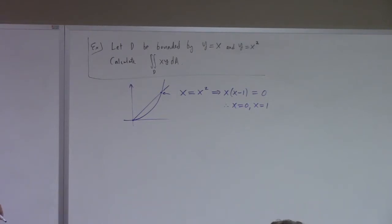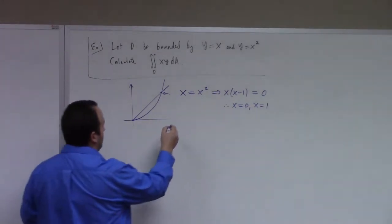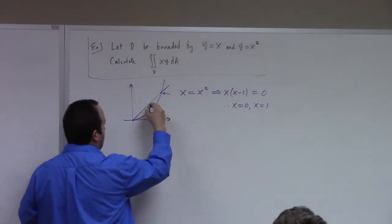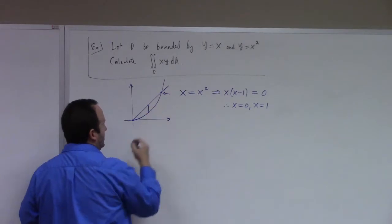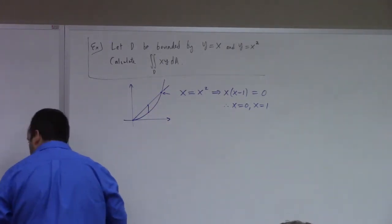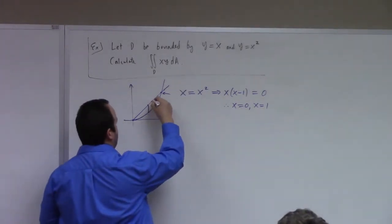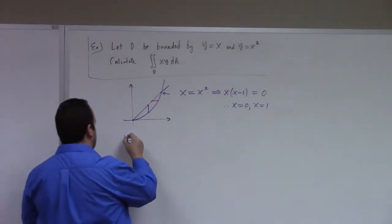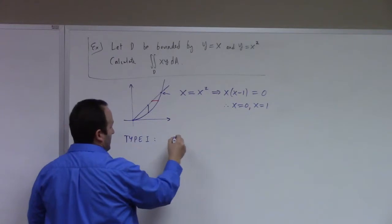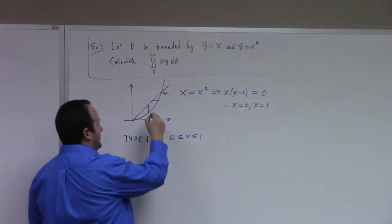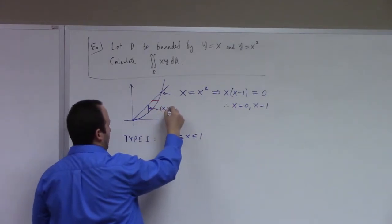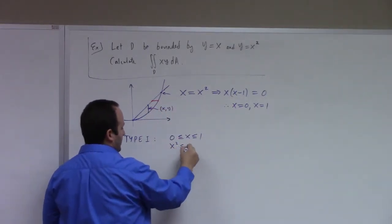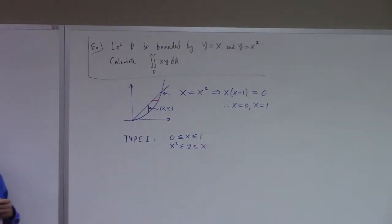Now you've got choices here. This is one of those very special regions, which is both type 1 and type 2. I can set up this region either as a type 1 region or as a type 2 region. The type 1 description is: 0 ≤ x ≤ 1, and at a typical point, x squared ≤ y ≤ x. That's my type 1 description.